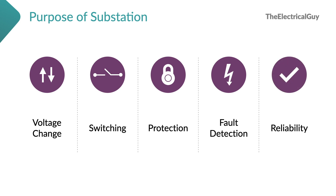Another important purpose is reliability. For example, if there are multiple bus bars and you need to carry out maintenance on one bus bar, then using the substation you can switch off that bus bar and still continue to give power to the end customer. That is why the substation bus bar arrangement is important. We will look at the different types of bus bar arrangements in the next live class.